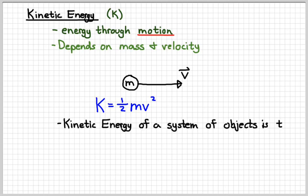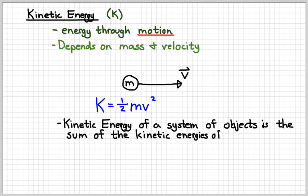If you have a system of objects, then the kinetic energy is just the sum of all the kinetic energies of the objects in the system. And the nice thing about energy is since it's a scalar, we don't have to worry about direction. And so moving in different directions doesn't affect our kinetic energy at all.